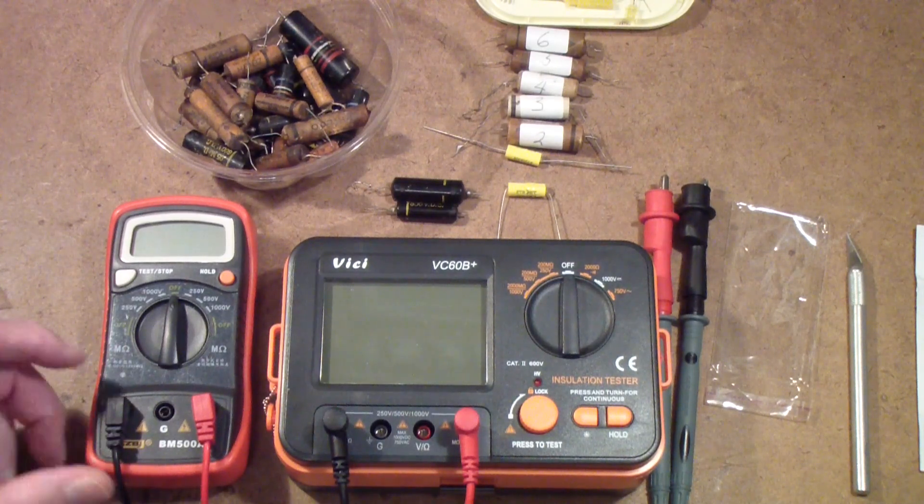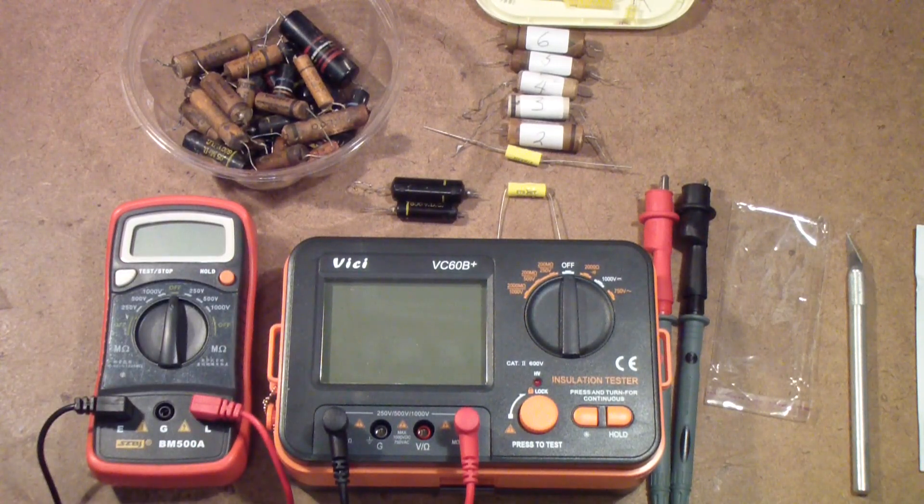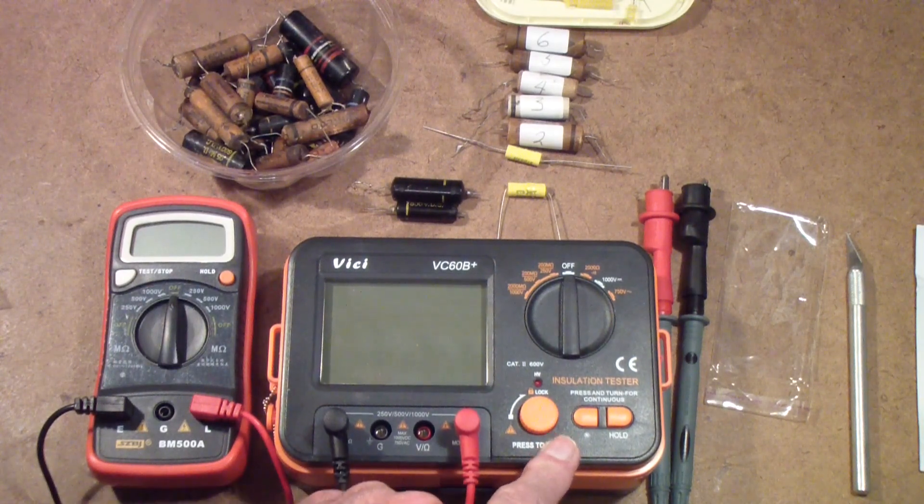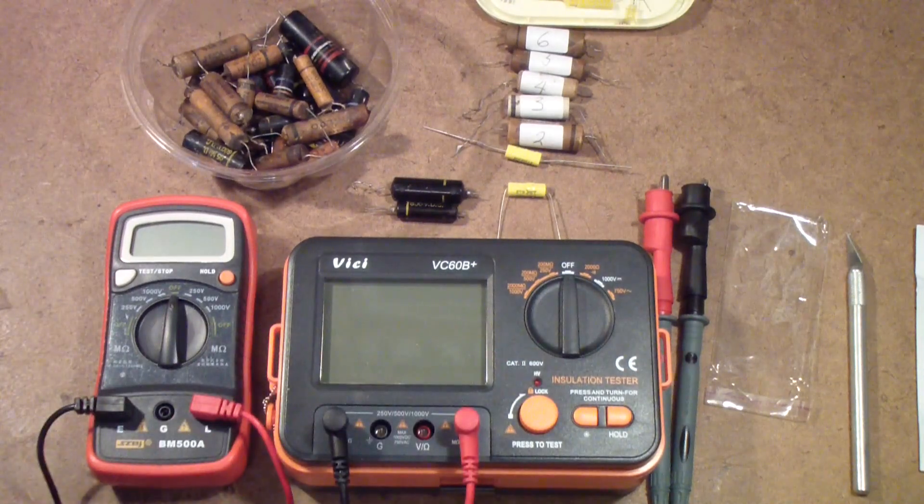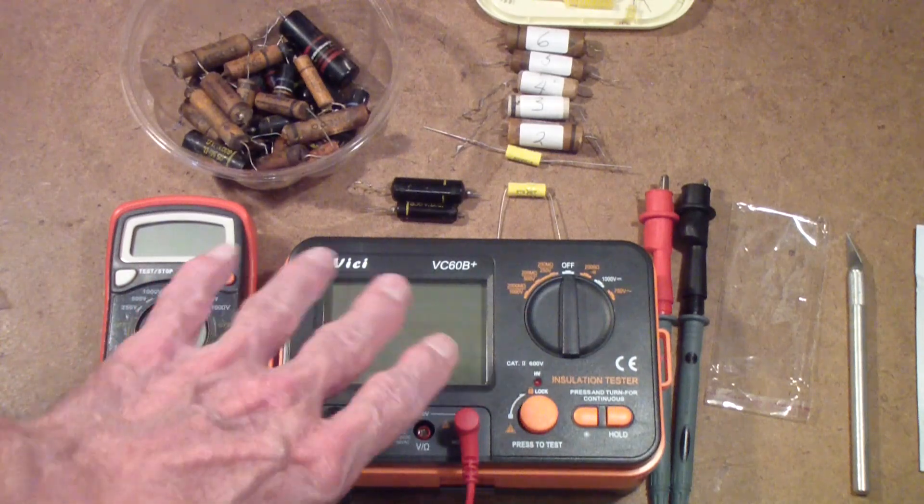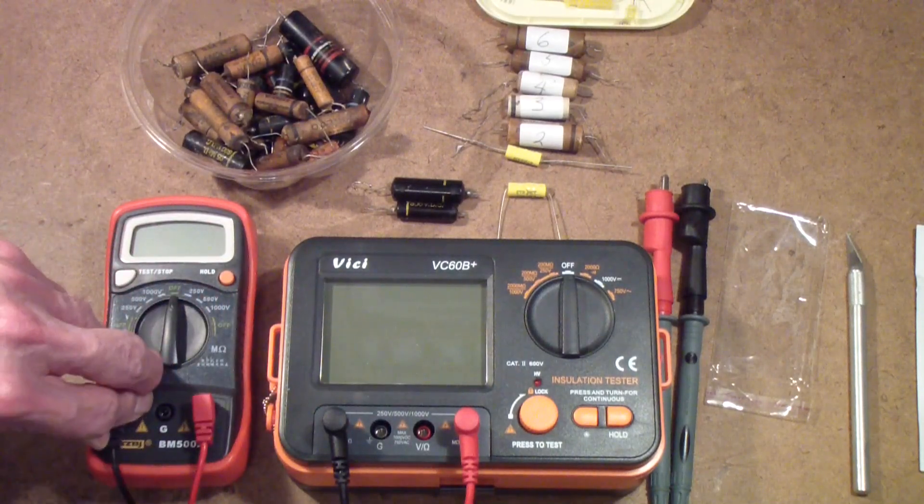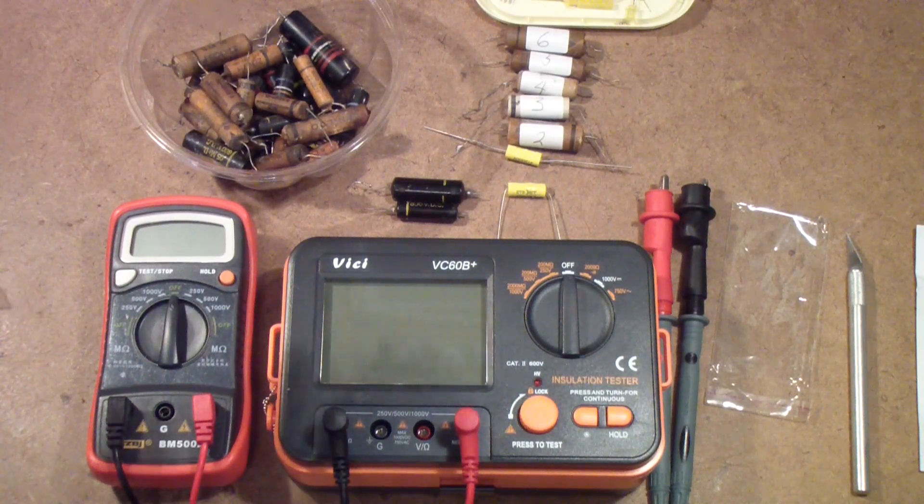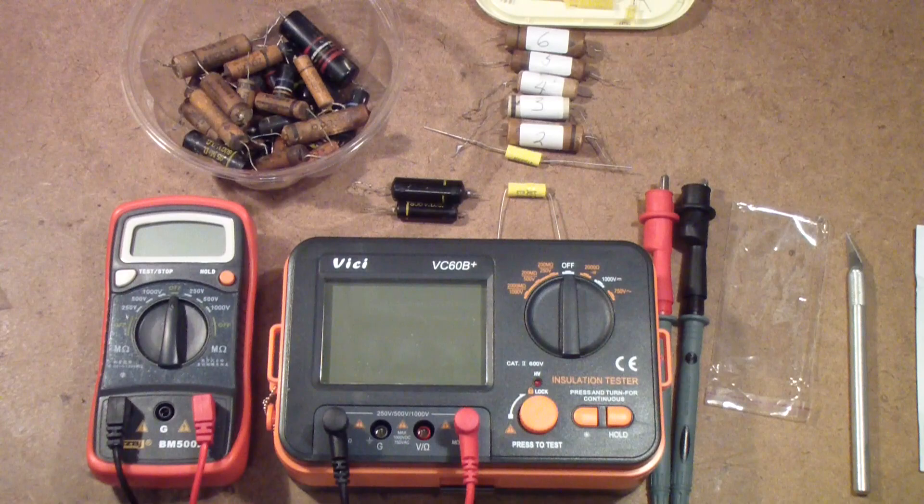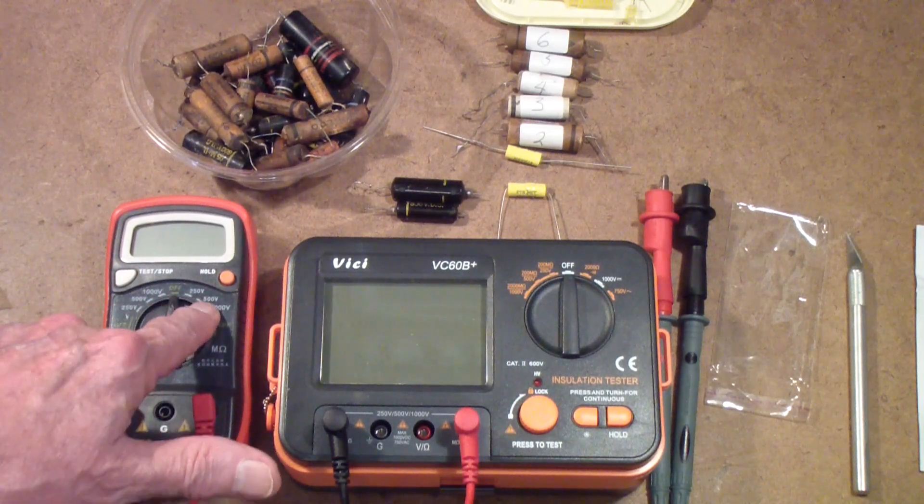This particular meter I don't know if it is CAT rated or not. The VC60B does say it is rated for CAT II 600 volts, but obviously you don't want to use these meters on service wiring that comes in from the street because you need a CAT IV meter for that. Everything I'm going to be using these for is inside an electronics lab and in every case there won't be any water, won't be any high humidity, won't be a lot of metal cases to worry about. So the differences between these is this one will measure up to 2,000 megaohms at 250, 500, or 1,000 volts.